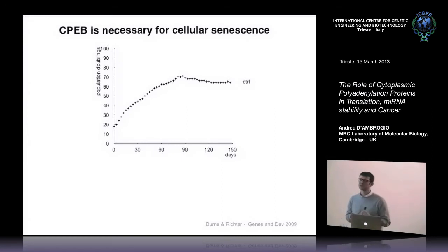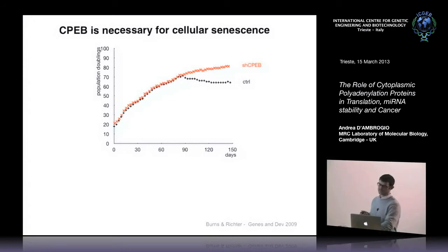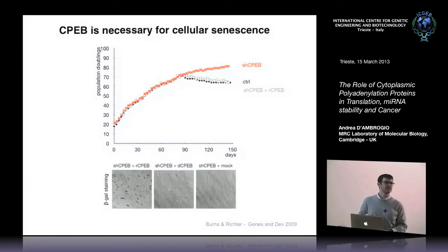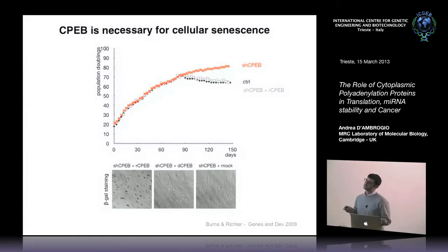Cellular senescence limits the replicative lifespan of a cell and is thought to be an anti-cancer mechanism. If we silence CPEB with a short hairpin, the cells continue to grow, thereby bypassing senescence. But if you add back a short hairpin-resistant CPEB to the silenced cells, you can restore senescence. This is also demonstrated by beta-galactosidase staining at acidic pH, a marker for senescence. Adding back a resistant CPEB gives dark staining, indicating senescence, while a CPEB that cannot bind RNA gives no staining.